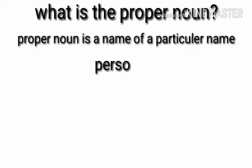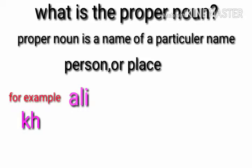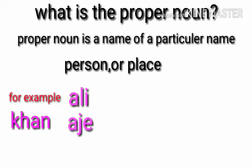What is a proper noun? A proper noun is a name of a particular person or place. Example 1: Ale or Ajay. This is a particular name of a person.